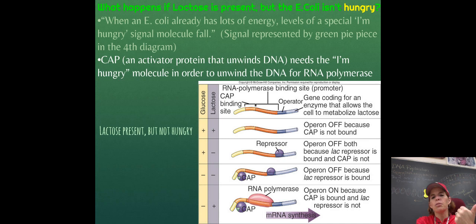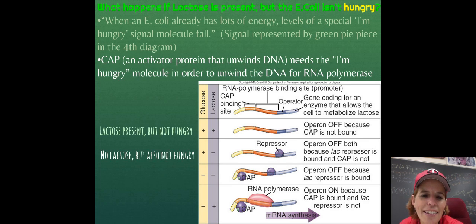If there's glucose and lactose present, this means that lactose is present, but the E. coli has already eaten. It already got glucose, so it's not hungry. So notice that the operon is off because cap is not there and there's no need for the repressor to be there. Notice in the second part, the E. coli has had plenty of glucose, but there's no lactose present. So there's no reason to make these proteins to digest lactose if there's no lactose present in the first place.